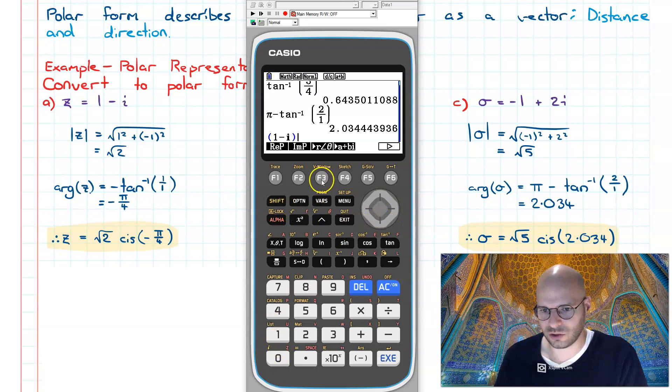So I go 1 minus i. Next, we turn our attention to f3 over here. This is the polar form, or this form is called phasor form, but it's basically the same as polar form.